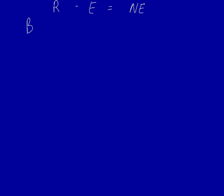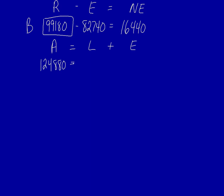Let's move on to company B. Revenue is unknown. Expenses are 82,740 and net earnings is 16,440. Solve for revenue, 99,180. Moving on to the basic accounting equation. Total assets are known. Liabilities are unknown. Equity is known. Solve for the unknown number and we get 30,570.